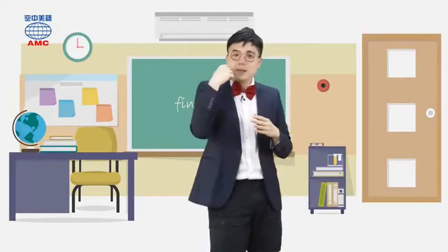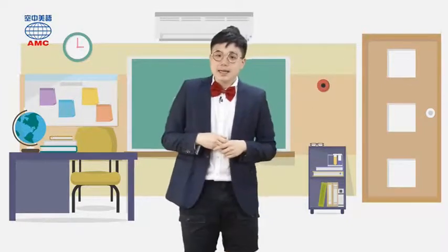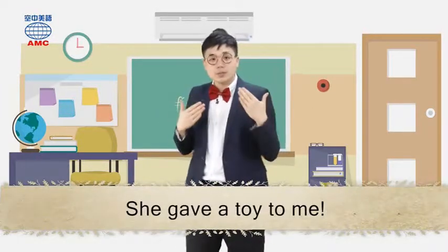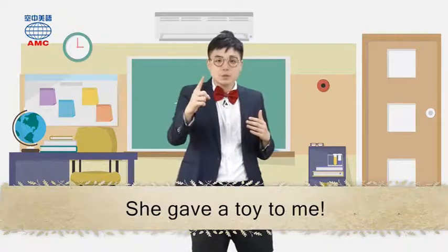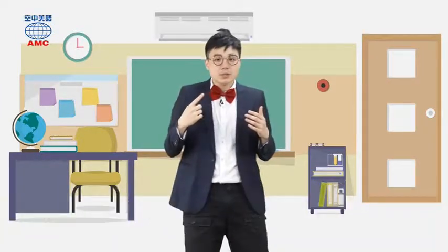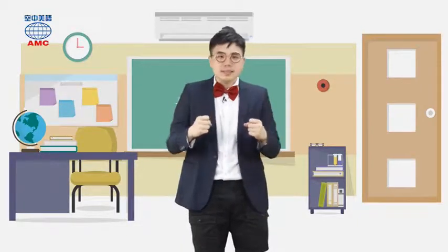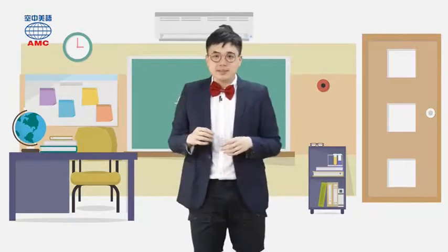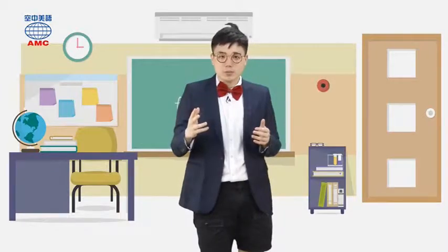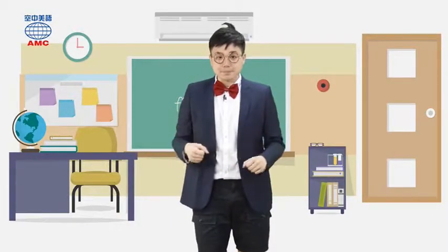例如刚才的例句：she gave a toy to me，她给我一个玩具。句型是：主词 + 授语动词 + 物品 + 介系词 to + 授词。我们的授词就是给予的对象。